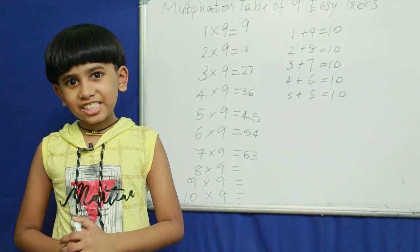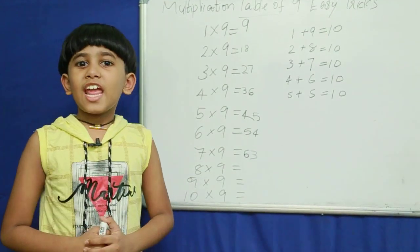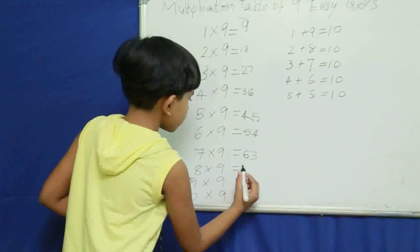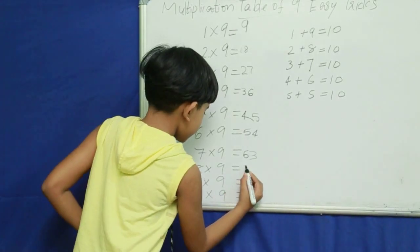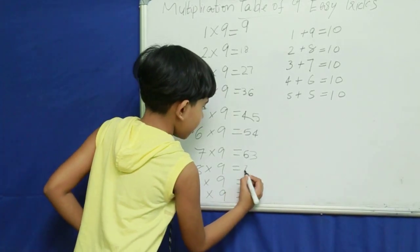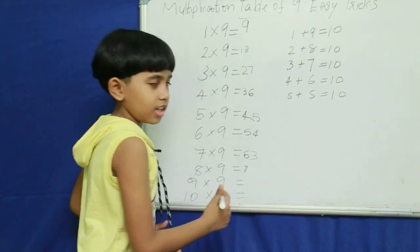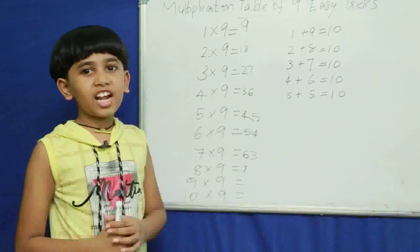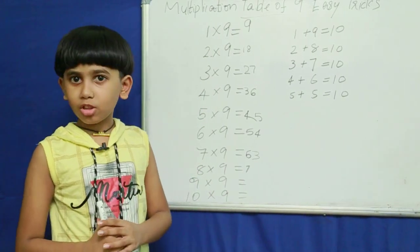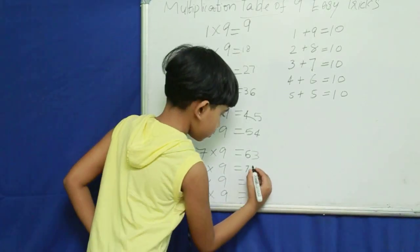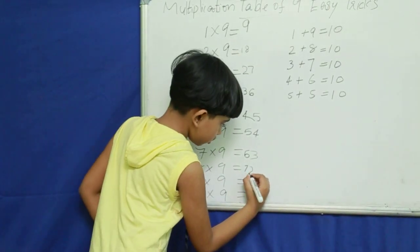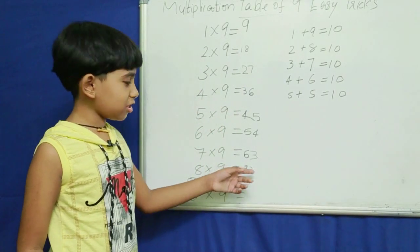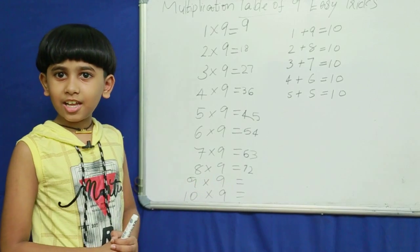Next, predecessor of 8 — 7. What do you add to 8 to get 10? 2. So we get 72.